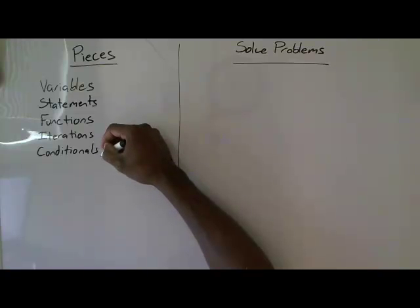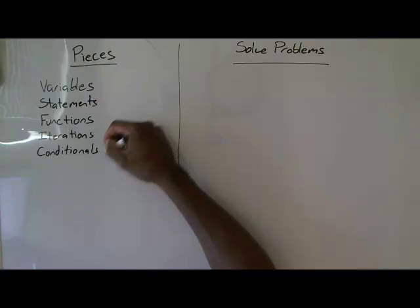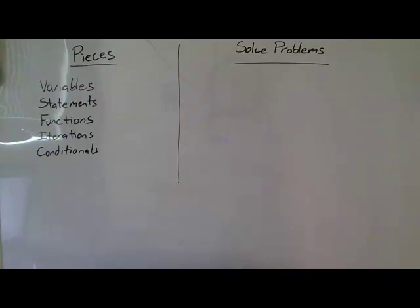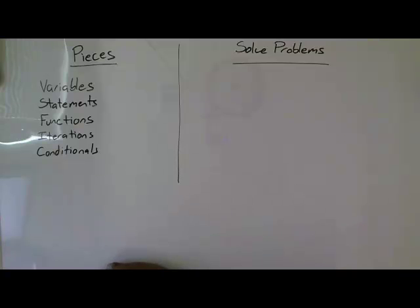And then conditionals are how we make computers make decisions. They aren't decisions like you and I make on a daily basis, but they usually boil down to either true or false decisions. If you arrange true or false decisions in the proper way, you can get some very good and effective results.